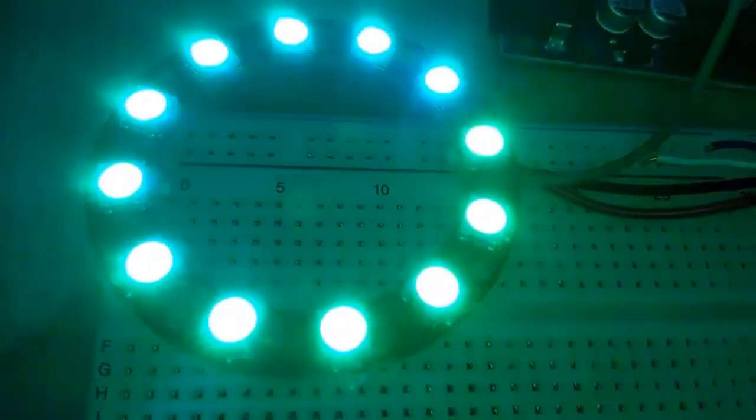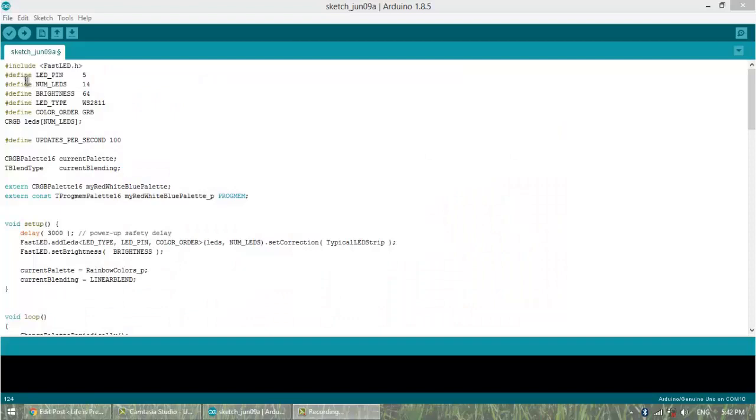This is the programming. This is the header file FastLED.h - you can find this header file at the link in the description below. We are using 14 LEDs, so I have written 14 here. We have set the brightness to 64.